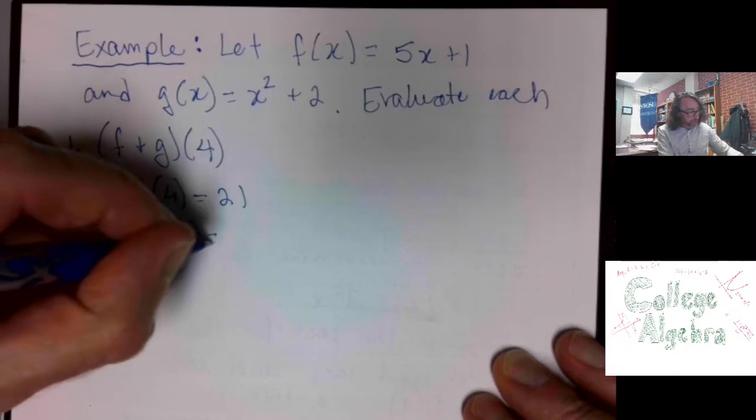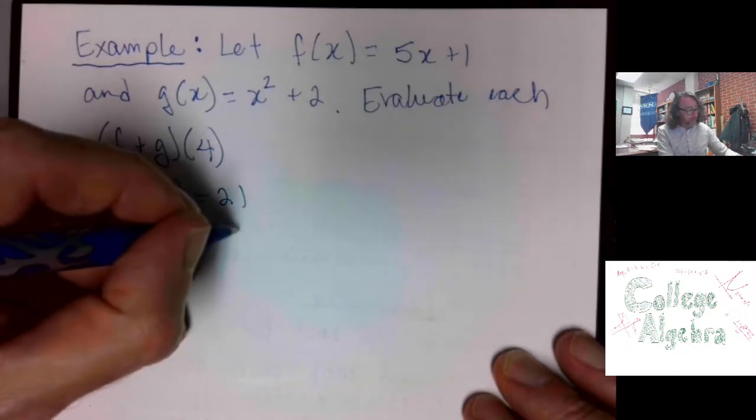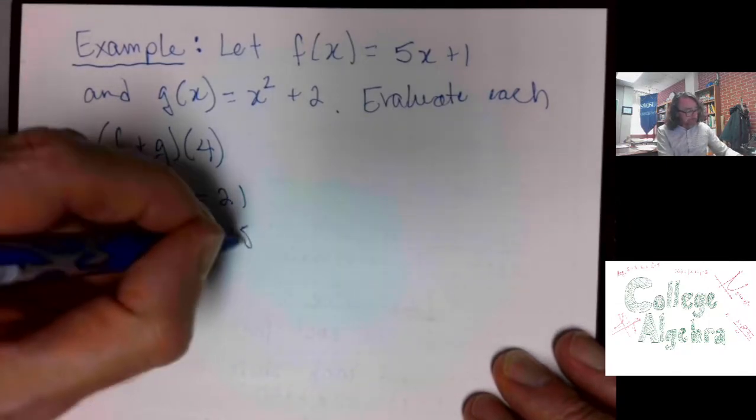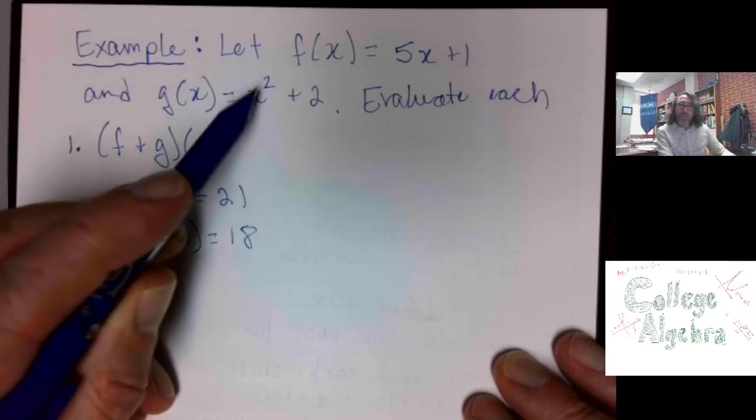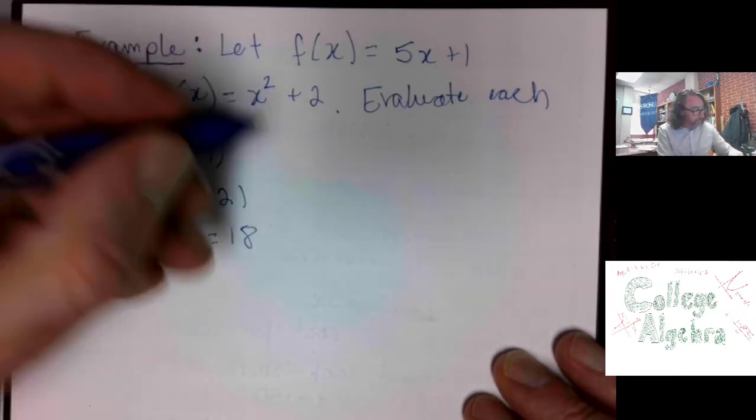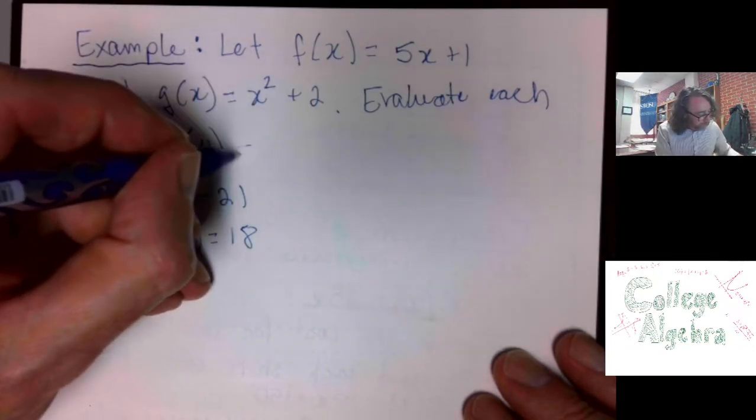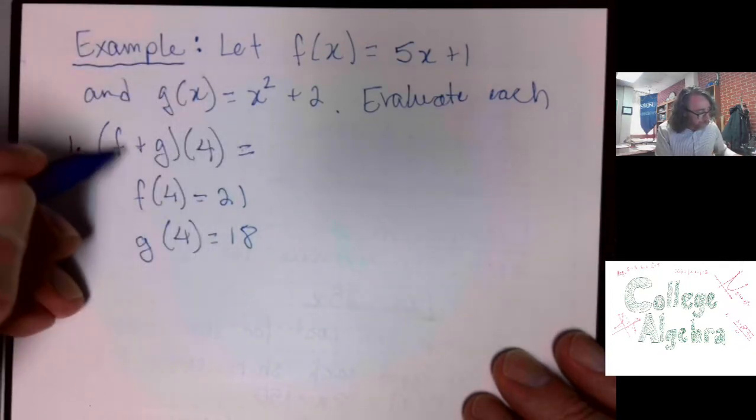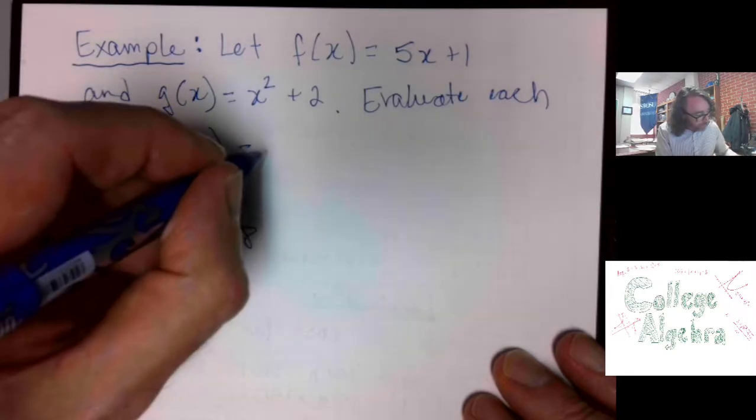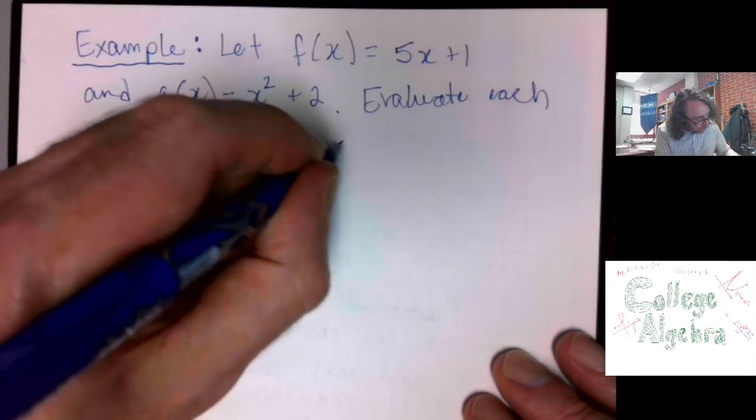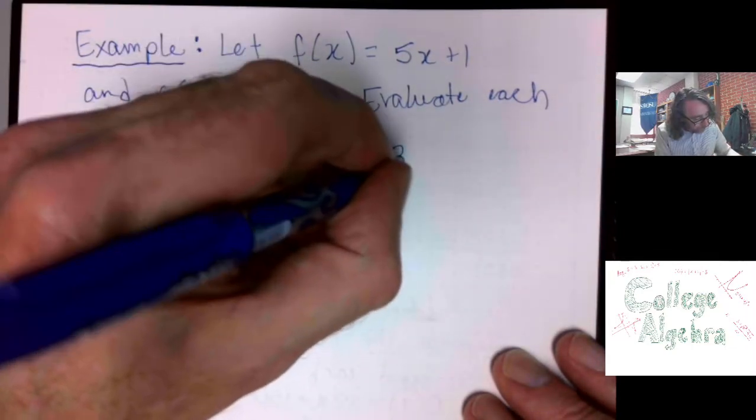We also need to compute g of 4. 18 I'm getting. The rule for g says, square your input, and then add 2. And this problem is asking me to add the two functions. So, I do 21 plus 18, 39.